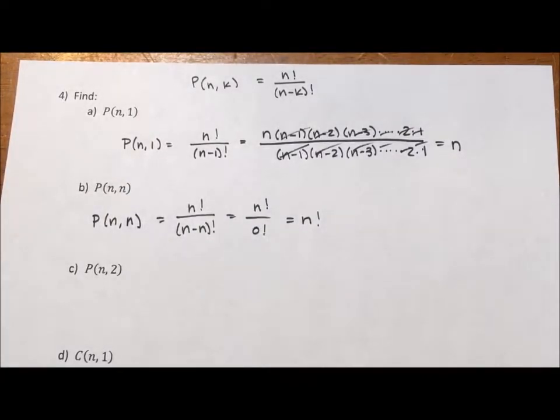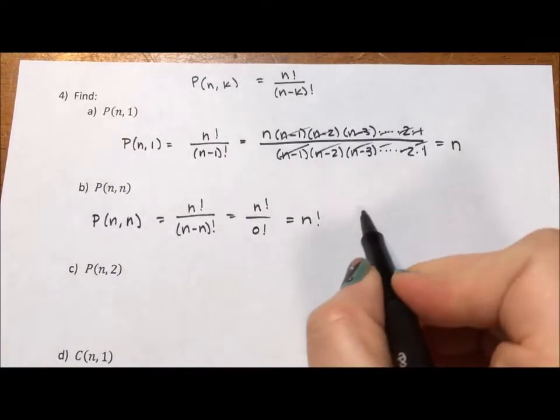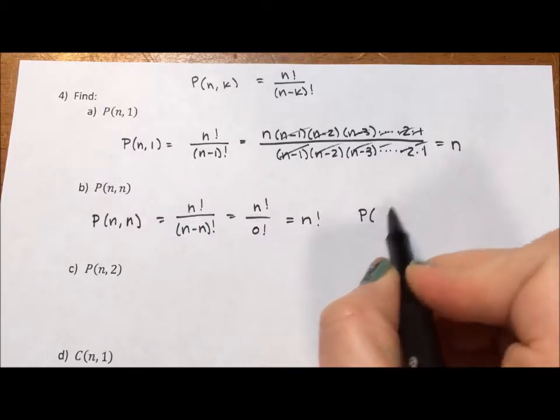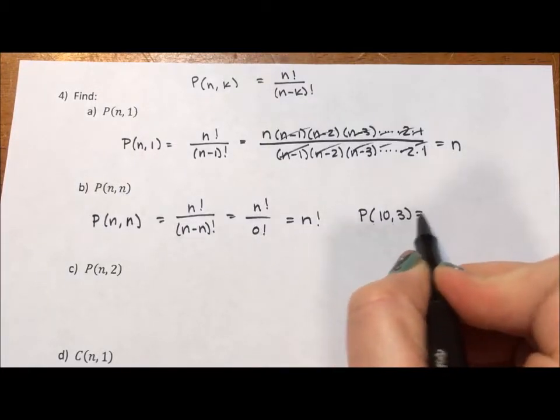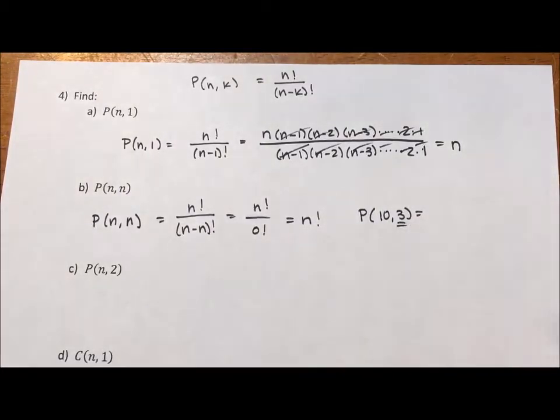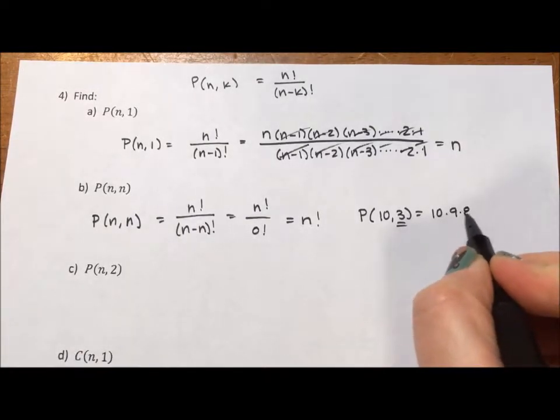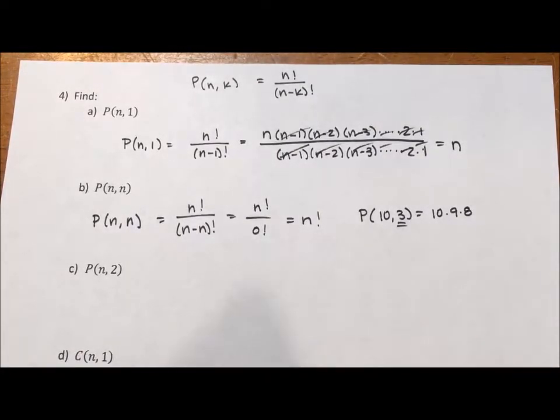I like to think of permutation as a truncated factorial. It's telling you, like if I have the permutation of 10,3, basically I'm saying I'm doing the first three items of the factorial. So, I'm doing 10 times 9 times 8. That's how it translates to me.